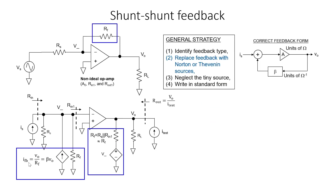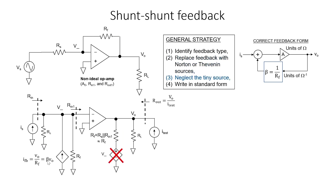Because our Norton source is our output voltage divided by RF, we can now identify beta as being 1 over RF. The next step in our general strategy is to neglect the tiny source. V minus should be small relative to the output voltage because this is the signal before it's amplified. Therefore, we're going to cross it off. As previously mentioned, we can approximate our Thevenin equivalent resistance with just RF, even though the real resistance would be a little bit higher.